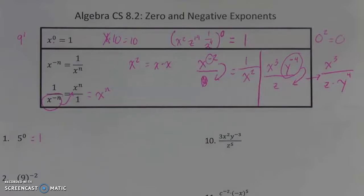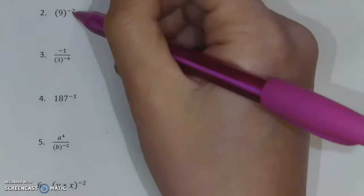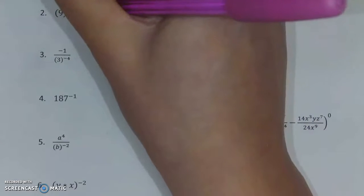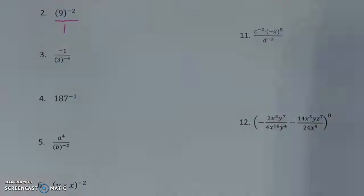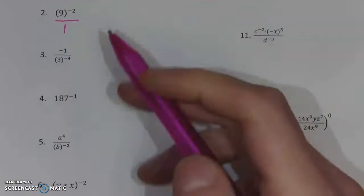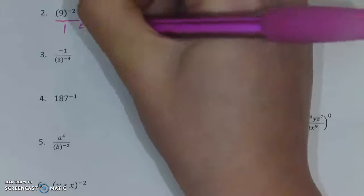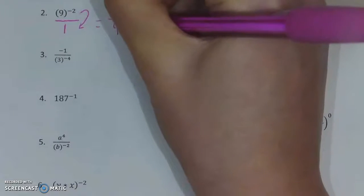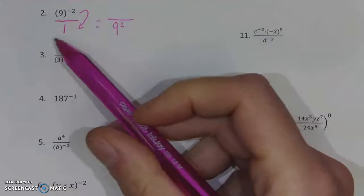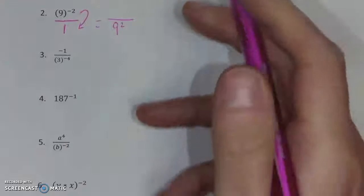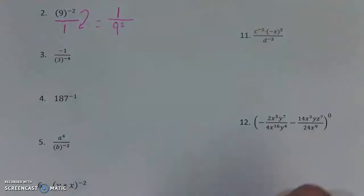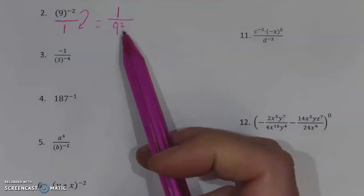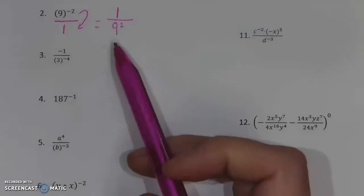Let's do some practice problems, because these rules are always easier to understand after a few examples. Our first one has a negative in the exponent, so we are going to turn it into a fraction to move it to the other part and get rid of that negative. We move it down, and we have nothing on top but one times nine to the second at the bottom — one times anything is just itself. Since there is nothing on top, we replace it with a one. That's what's left in multiplication and division. So we've got one over nine squared, and you can leave it as nine squared.